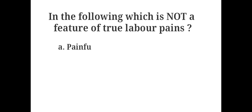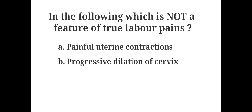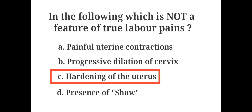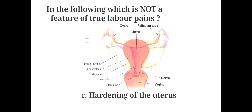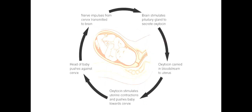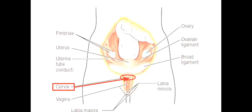In the following, which is not a feature of true labor pains? A. Painful uterine contractions, B. Progressive dilation of cervix, C. Hardening of the uterus, D. Presence of show. The answer is C. Hardening of the uterus is not a feature of true labor pains. During true labor pains, intensity of contractions becomes stronger, cervix progressively dilates, and the mucus plug dislodges from the cervix, which is called show or a bloody show.